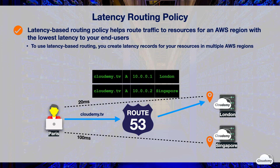For example, you have resources in London and Singapore and created a latency record for each region. When a user in Paris enters the domain name in a browser, the DNS query goes to Route 53. Route 53 checks the latency — in this case, the London region gives the lowest latency — so Route 53 routes user requests to London. Please note that Route 53 determines the latency between your users and AWS regions of latency records, regardless of where your resources are actually located.